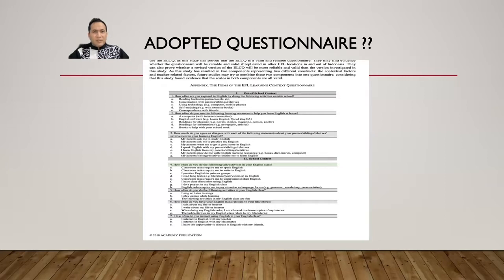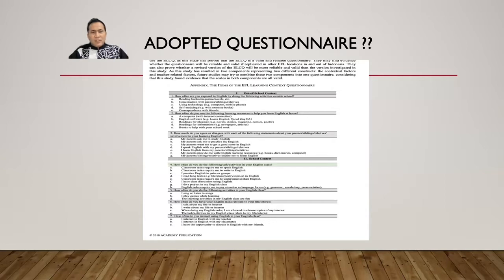Sometimes the questionnaire appears with questions and options like 'like/dislike,' 'yes/no,' or 'agree/disagree.' As shown in the slide, the questionnaire has questions in the first part and options A, B, C, D as answer choices for respondents. If you want to adopt this questionnaire, you take all parts and use it in your research.